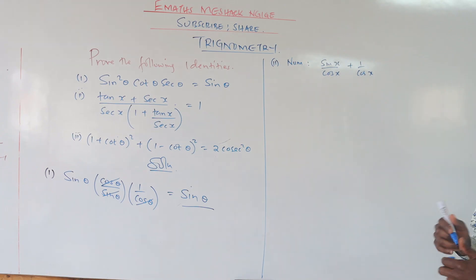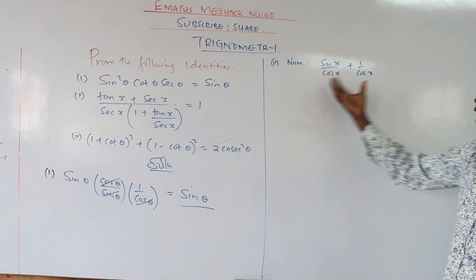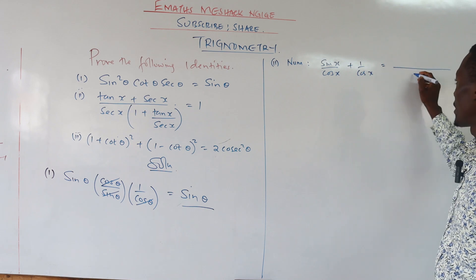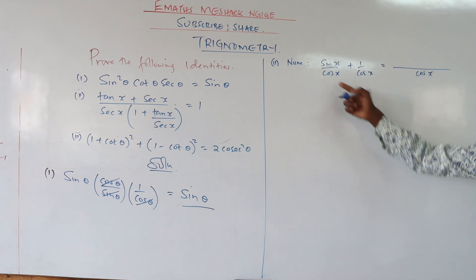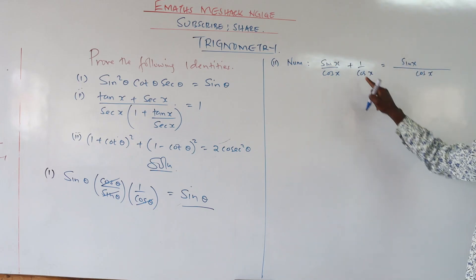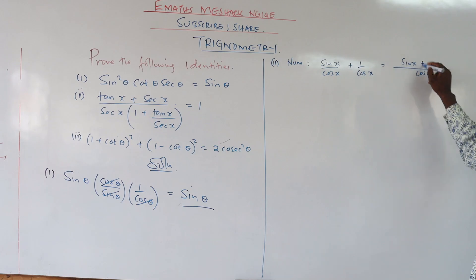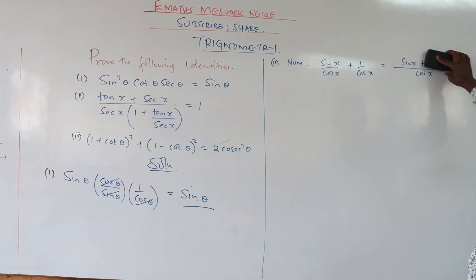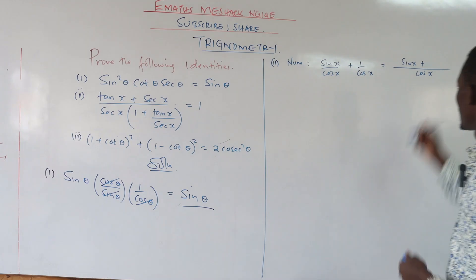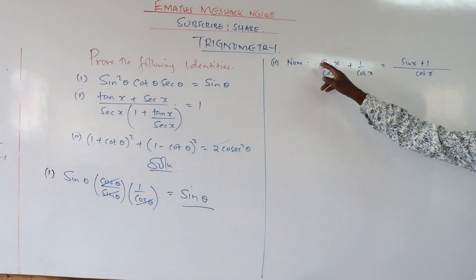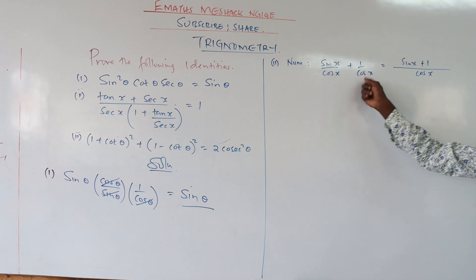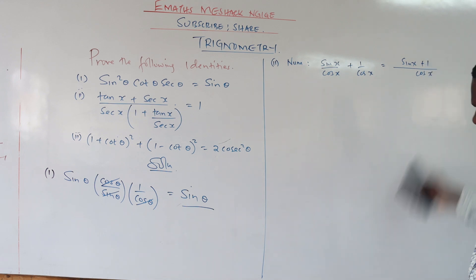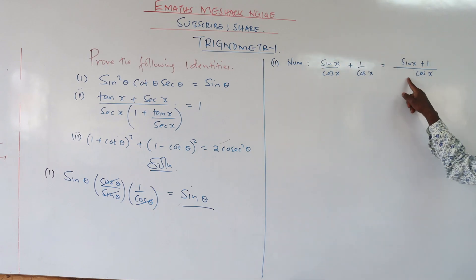Since the numerator has two fractions, we treat them as fractions and put them together as one fraction. The denominator is the same — cosine of x — so the LCM is just cosine of x. One times sine of x gives you sine of x. Adding the numerators with the common denominator, the numerator expands accordingly.